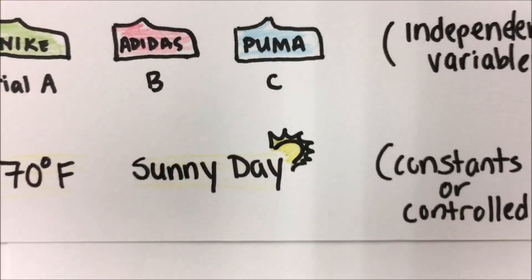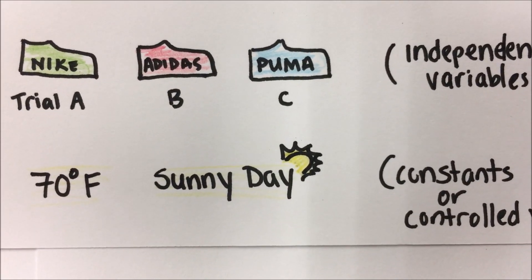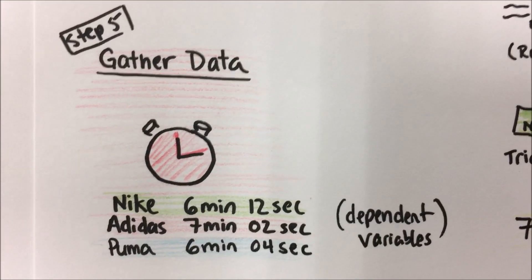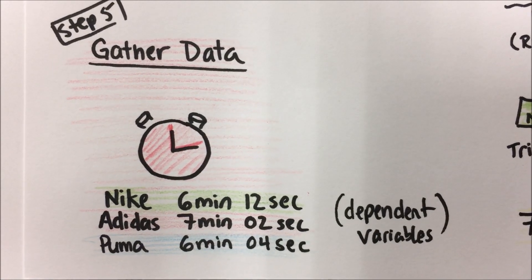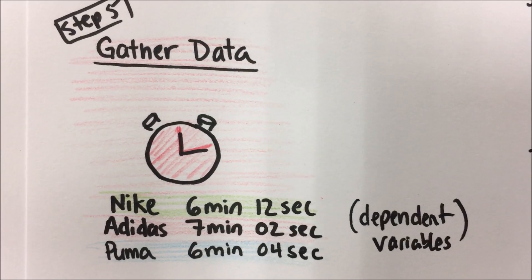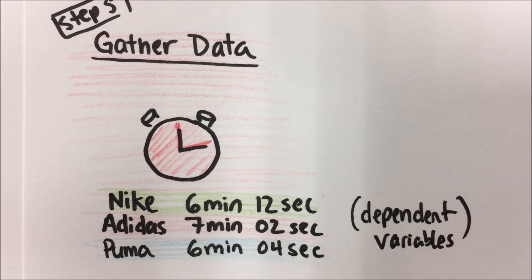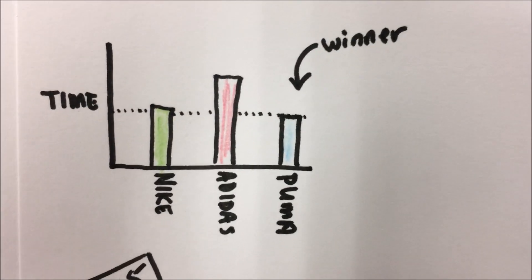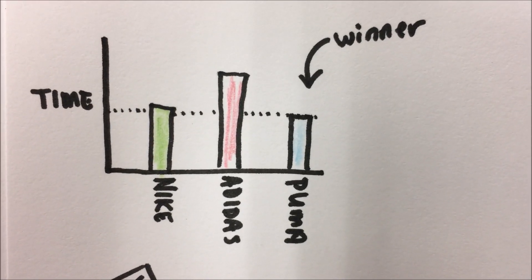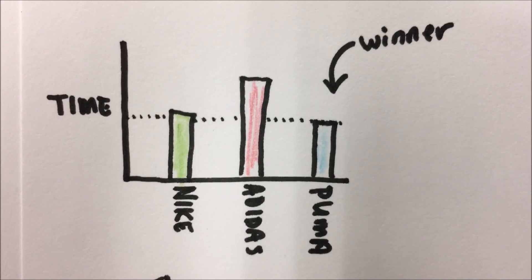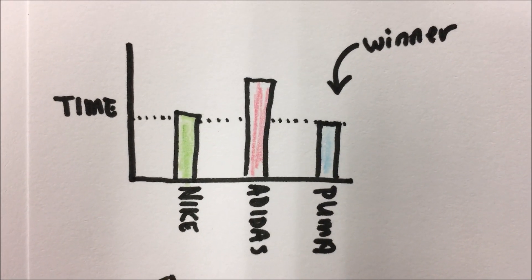Independent is what we change — we changed the shoes. What we keep the same: the weather, the track, the runner. What we get out of the result of our experiment is our data. Step five is gathering and analyzing data. Here we have the times — the dependent variable: Nike at six minutes twelve seconds, Adidas at seven minutes two seconds, Puma at six minutes four seconds. Based on that, we're going to create a graph. Our dependent variable, time, goes on the left or y-axis; our independent variable, the shoes, goes on the x-axis. We can see from the graph that our winner was Puma.